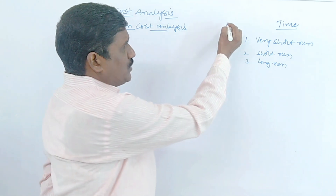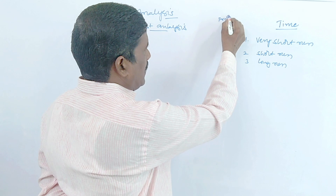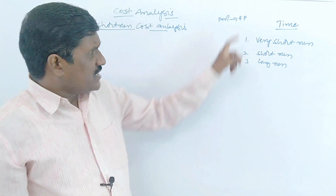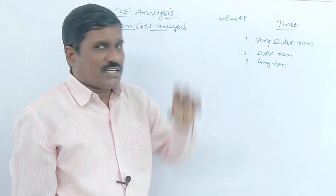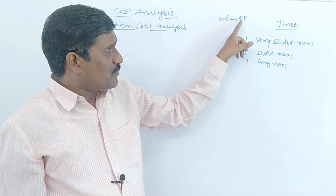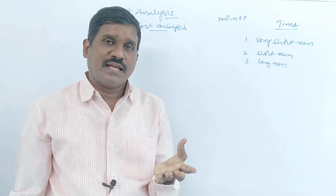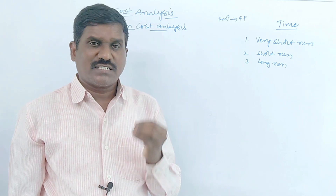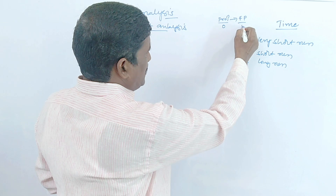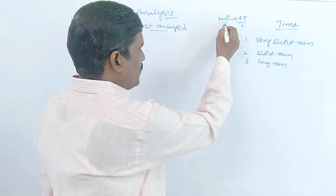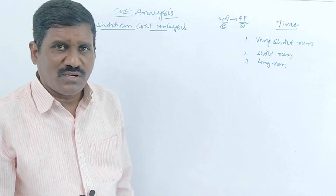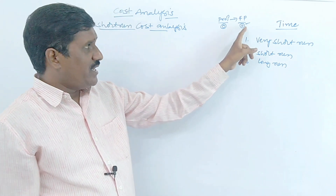Suppose if you want to increase the production, automatically we want to increase the factors of production. The factors of production which are helpful to the process of production are: land, labor, capital, organization, and technology. If you want to increase production, all factors of production should also be increased.